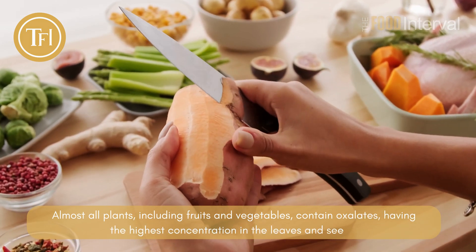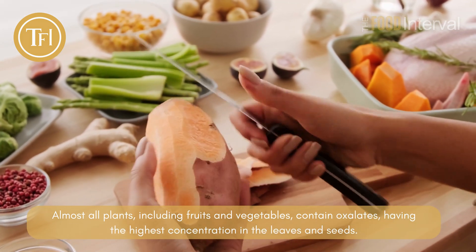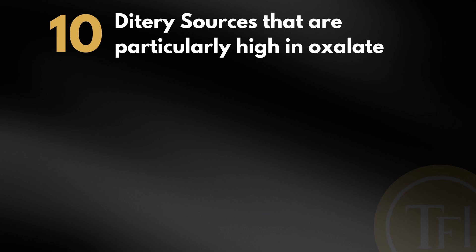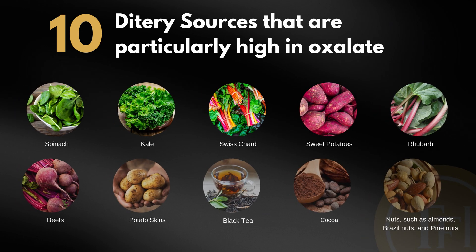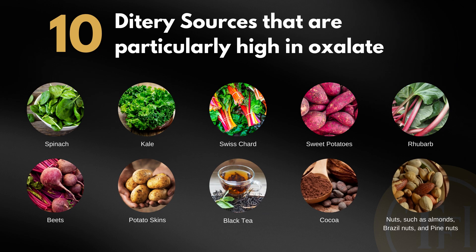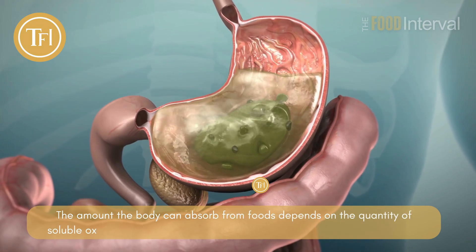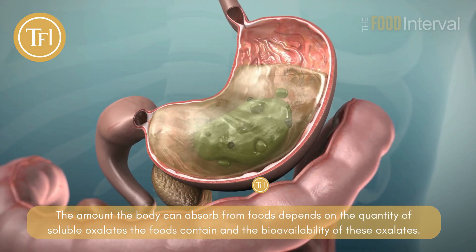Chapter 4: How people consume oxalate. People typically consume oxalate through dietary sources. Almost all plants including fruits and vegetables contain oxalates, with the highest concentration in the leaves and seeds, though the amount varies considerably. Dietary sources particularly high in oxalate include spinach, kale, Swiss chard, sweet potatoes, rhubarb, beets, potato skins, black tea, cocoa, and nuts such as almonds, Brazil nuts, and pine nuts.